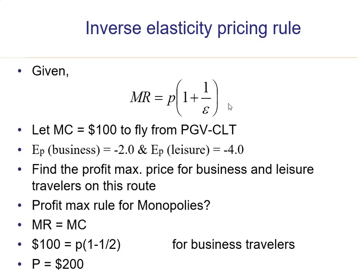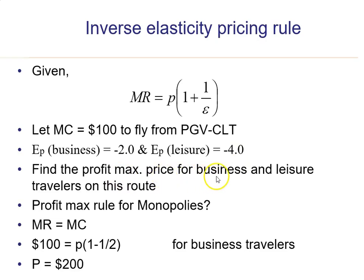Given the inverse elasticity pricing rule formula, let's show how it's used. Suppose between two airports — Pittsburgh Greenville and Charlotte — the marginal cost for the firm is $100. The price elasticity of demand differs by traveler type: for a business traveler it is negative 2, and for a leisure traveler it is negative 4. We need to find the profit-maximizing price for each traveler type, since the price won't be the same.